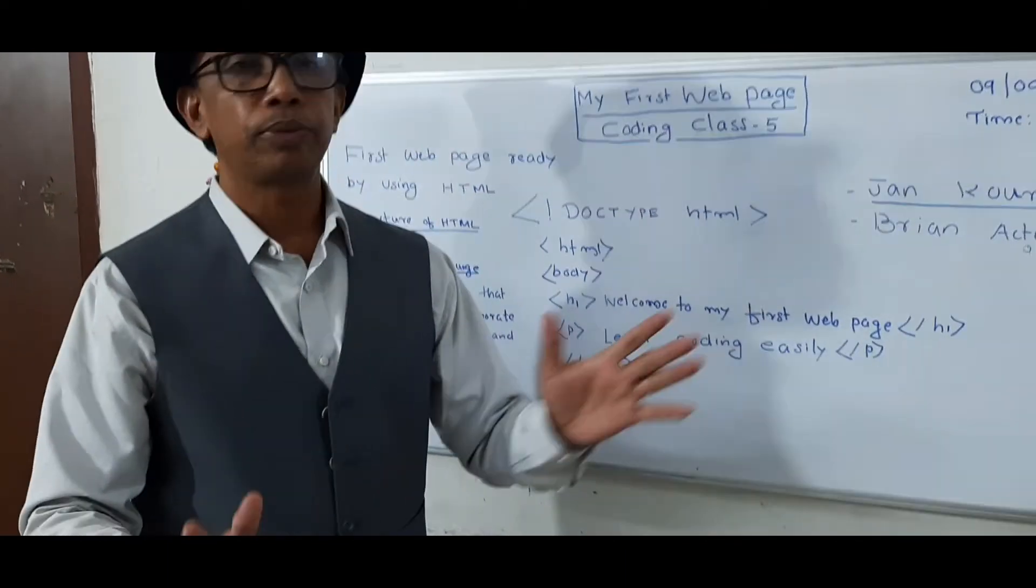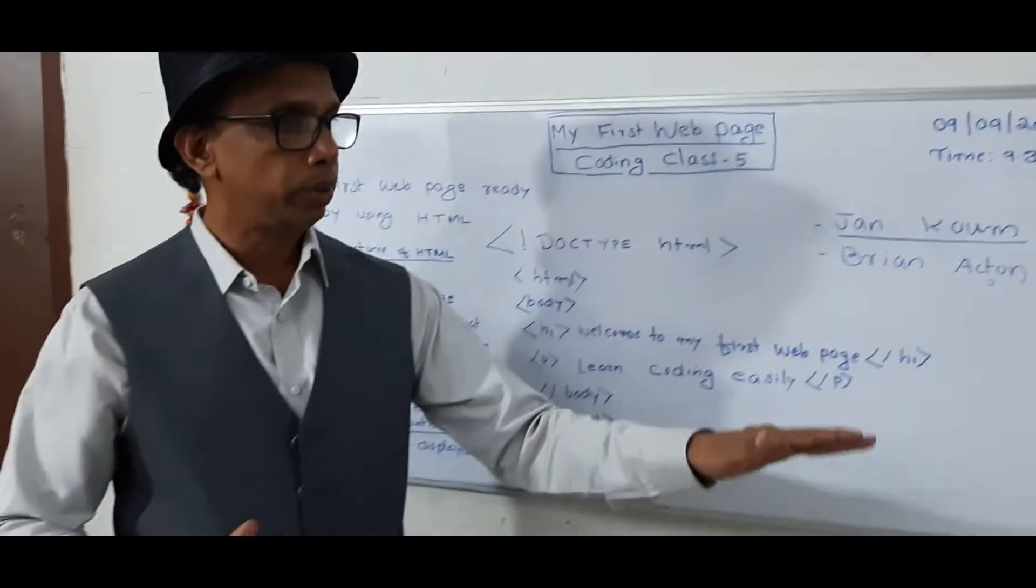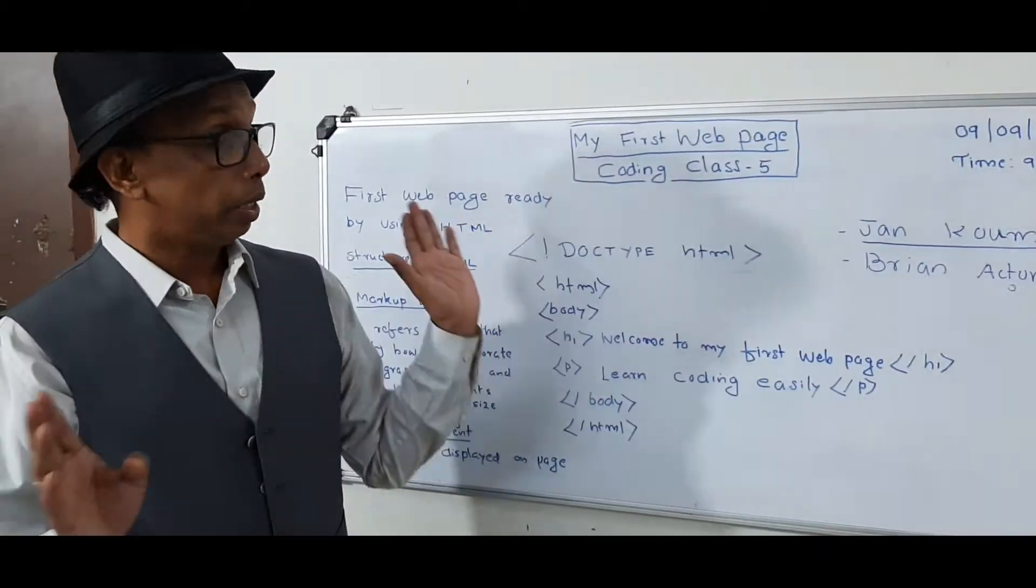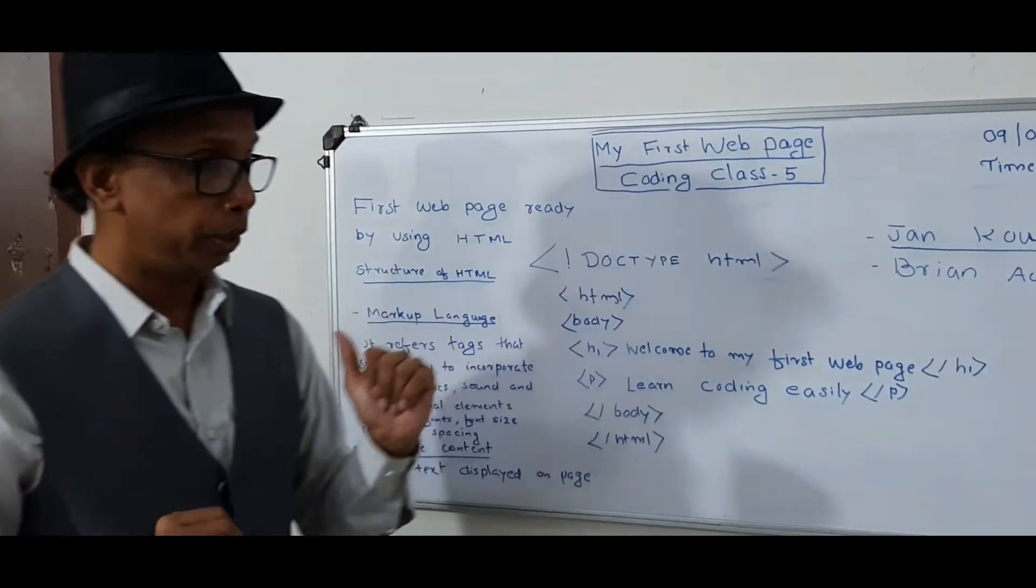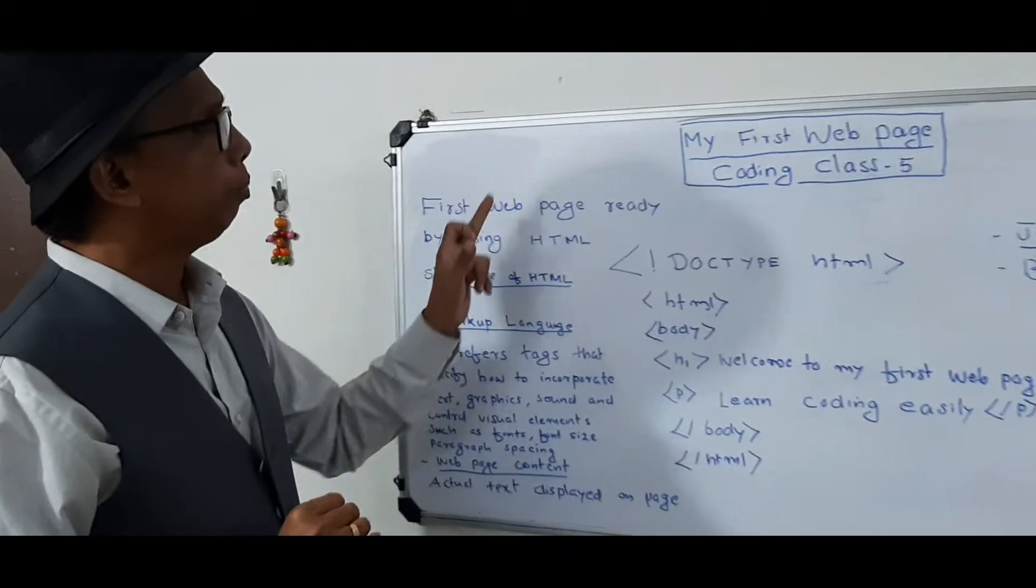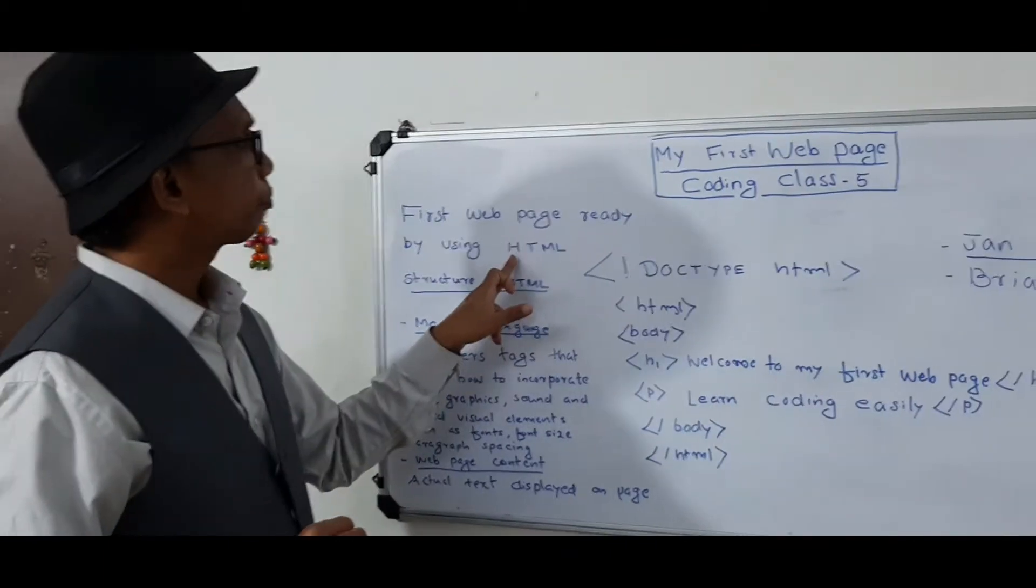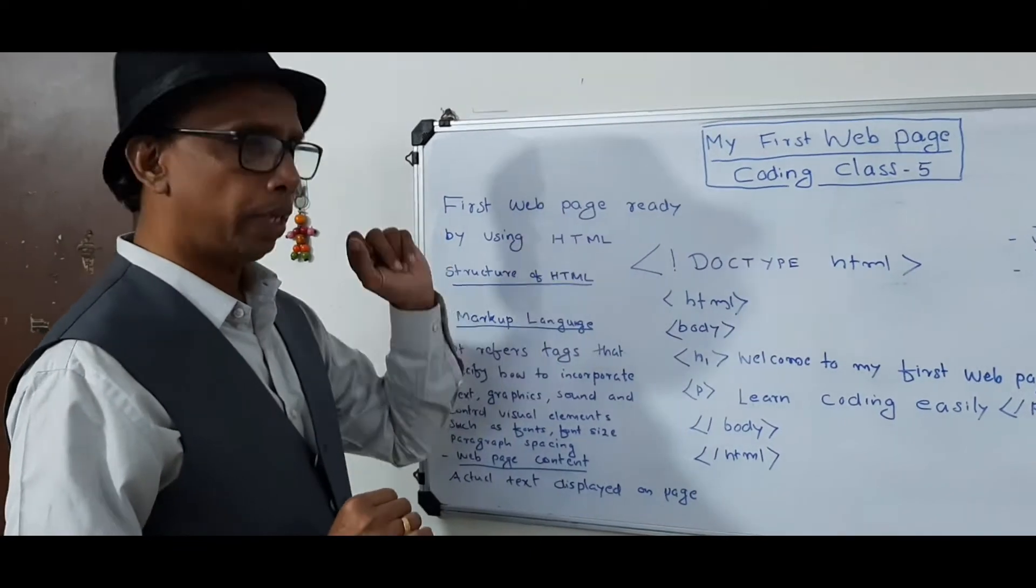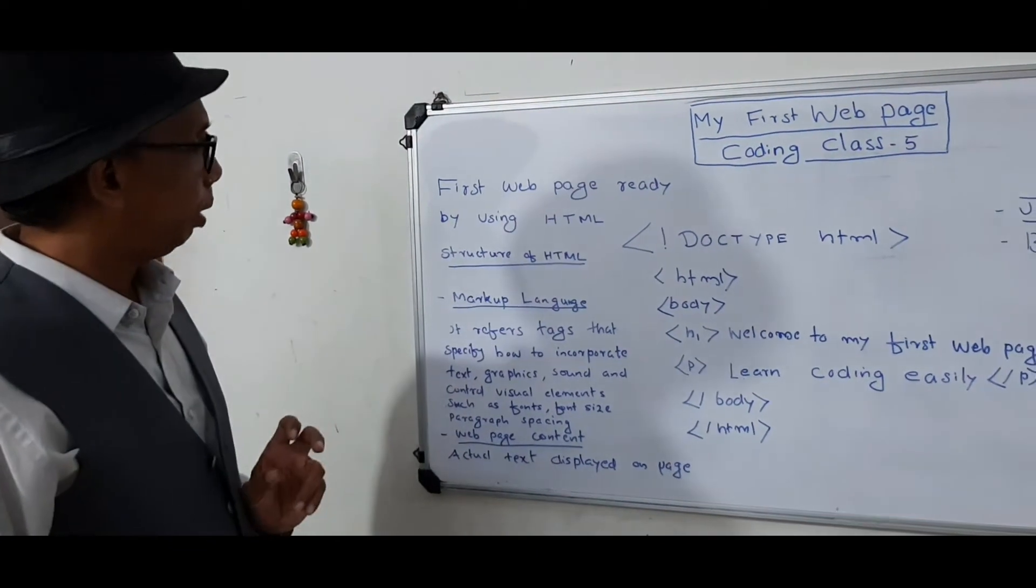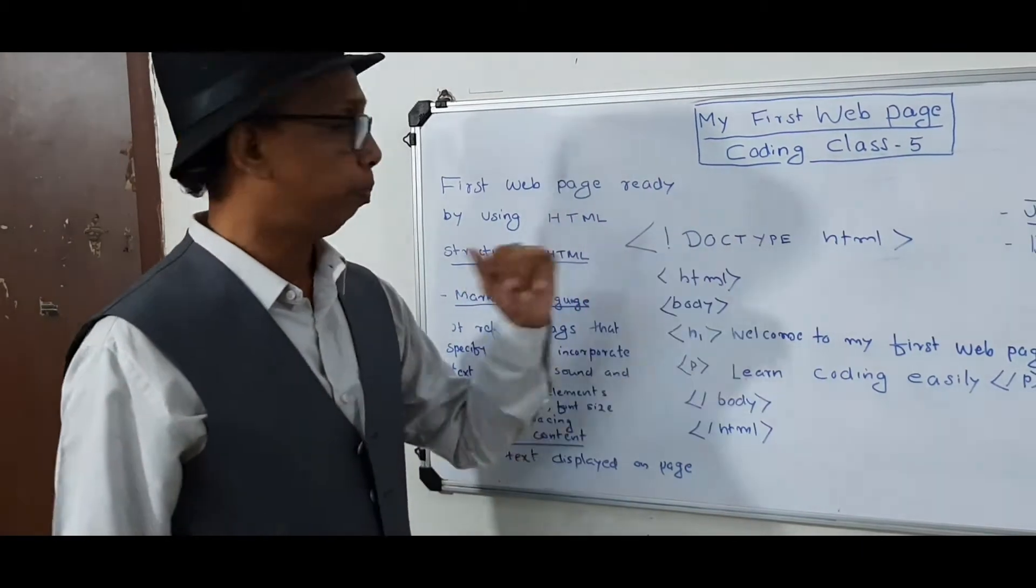Then it will shut down. Likewise, so there is a program language in the computer. Here, if you want to make a web page, we can make the web page with the help of HTML. This is a coding language. Using this HTML, we can make a web page.